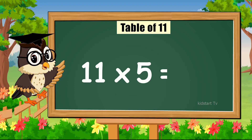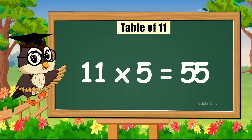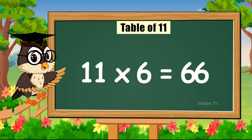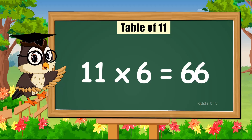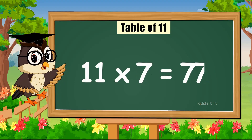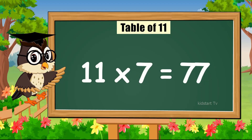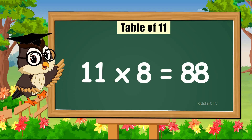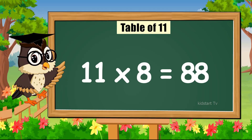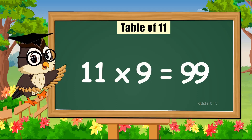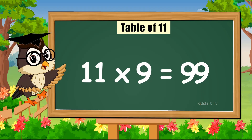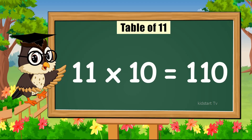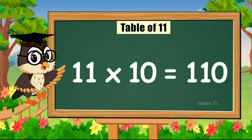Eleven times five is fifty-five. Eleven times six is sixty-six. Eleven times seven is seventy-seven. Eleven times eight is eighty-eight. Eleven times nine is ninety-nine. Eleven times ten is one hundred and ten.